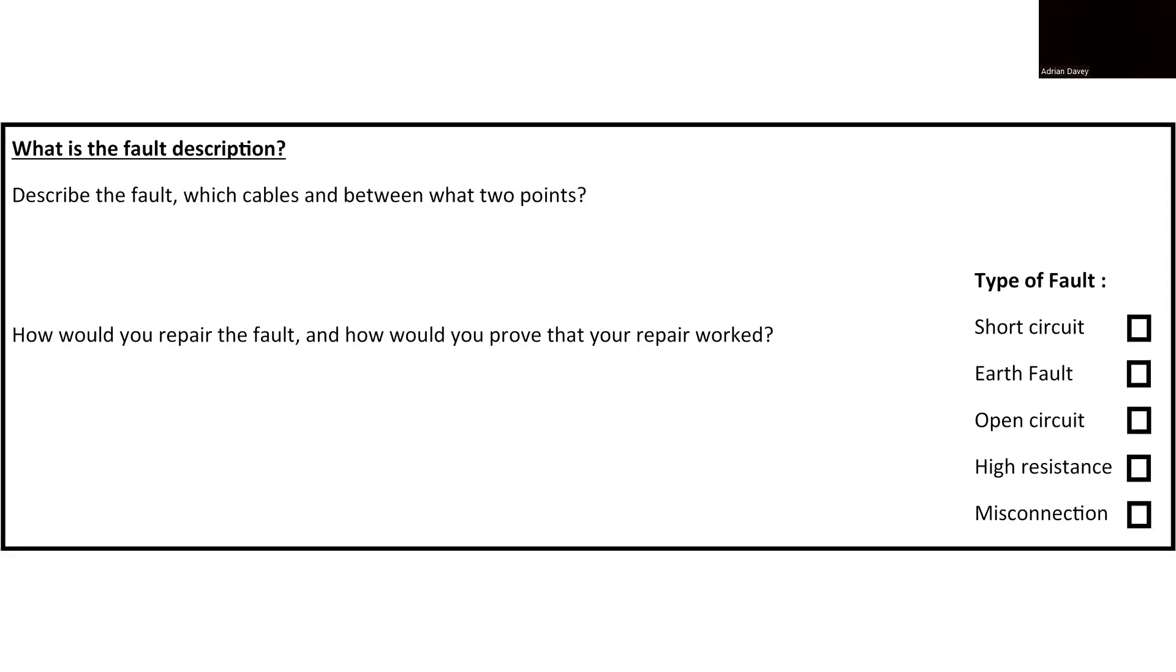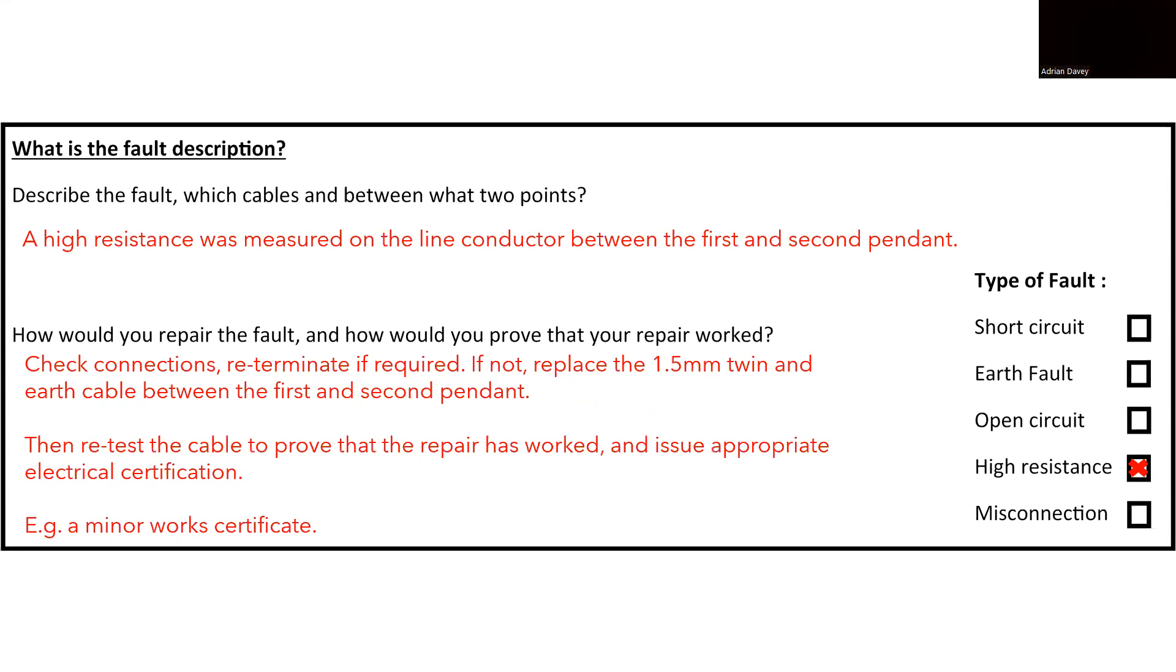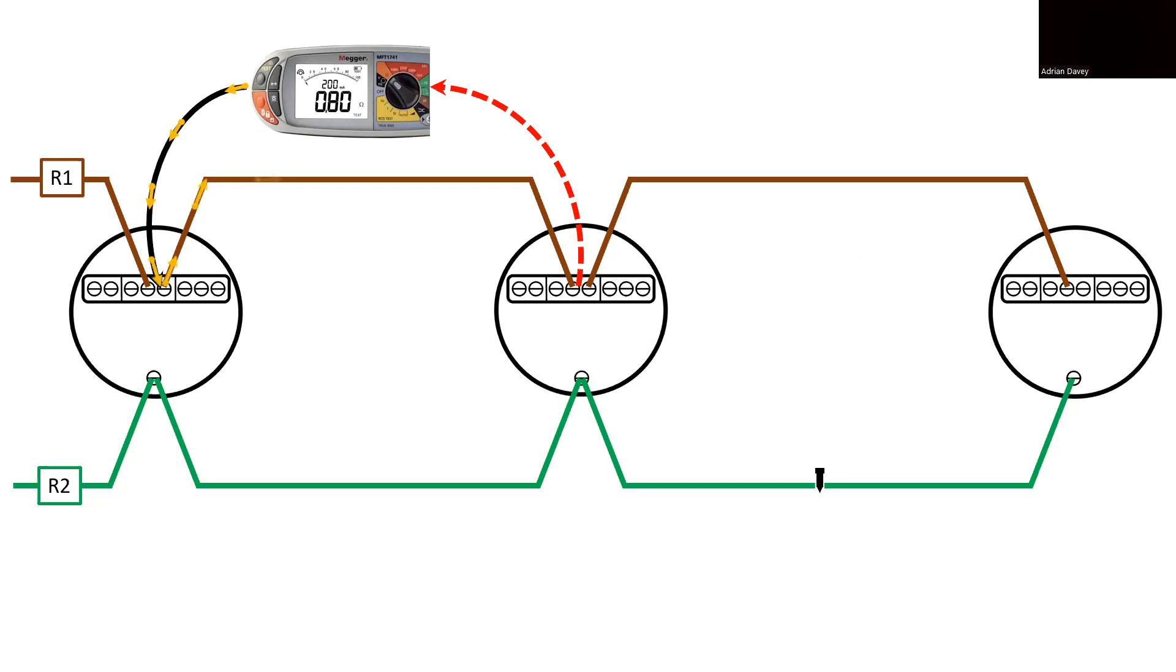If you are required to write a report on the fault to provide feedback to the person who requested the work, the report could be structured as follows. A high resistance fault has been identified between the first and second pendant on the line conductor. This issue allows us to classify it as a high resistance fault. To rectify this, we can replace the 1.5 mm twin and earth cable running between the first and second pendant since the line conductor is an integral part of this cable. After completing the required repairs or replacement, it is essential to conduct retesting to confirm the success of the repair. This step is critical for both verifying continuity and resistance, and without retesting, there would be no reliable means to determine the effectiveness of the repair when a minor work certificate may be required.